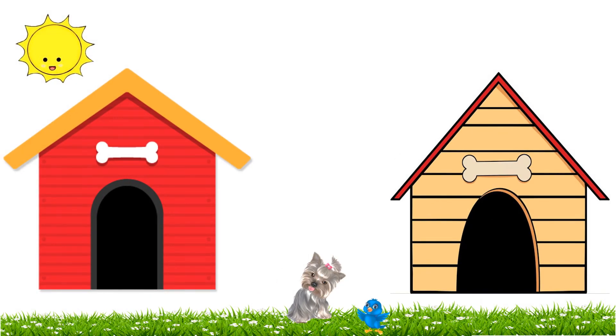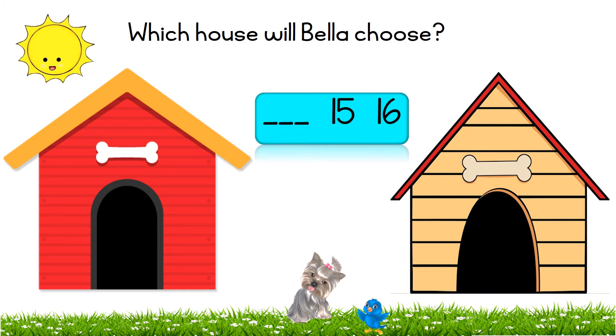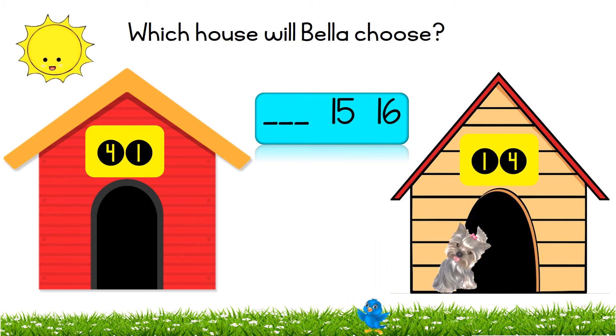Bella! Which house will Bella choose? Blank, fifteen, sixteen. Bella has to choose the house with the number that comes before fifteen and sixteen. Is it forty-one? Or is it fourteen? Terrific! Bella chose house number fourteen because fourteen comes before fifteen and sixteen.